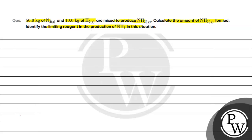Key concept for this question is limiting reagent. Limiting reagent basically wo species hoti hai jo hamare paas kam amount mein present rehti hai. Jo species kam amount mein present rehti hai, basically uske according hi reaction work karti hai.